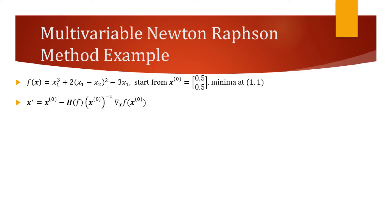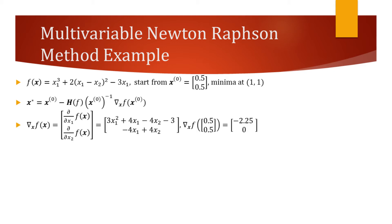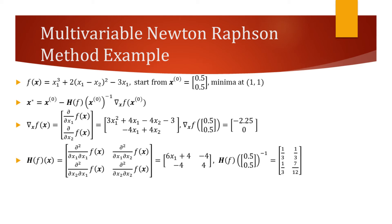To use the formula, we will have to evaluate the gradient and the Hessian of our function for the current point. First, we find the gradient of our function and evaluate it at (0.5, 0.5). Next, we find the Hessian matrix, evaluate it at our starting point, and find the inverse of the result.